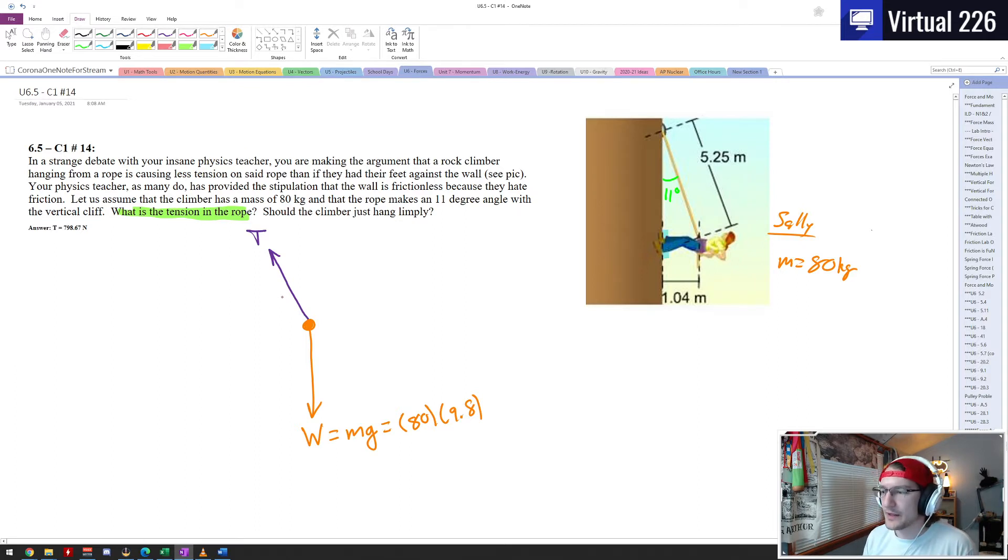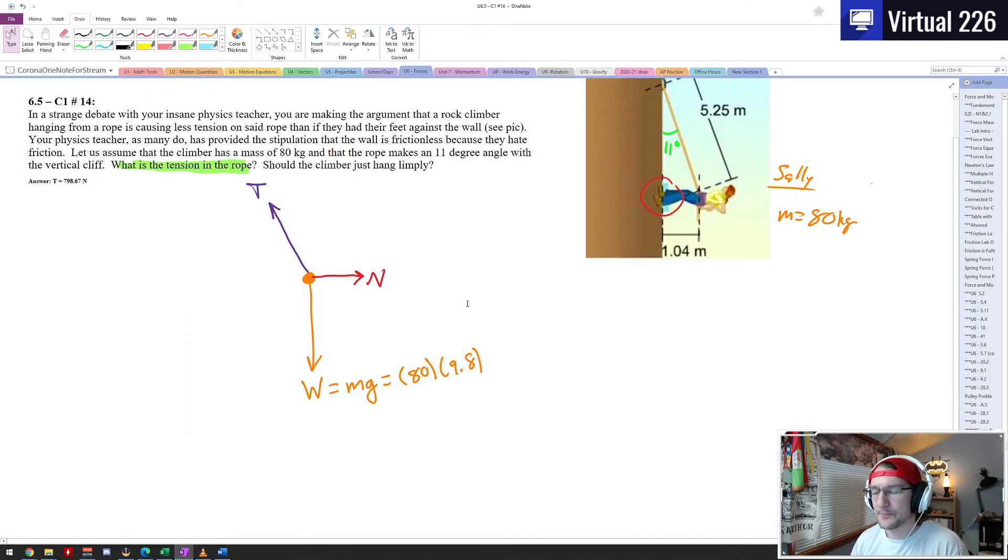Now if we wanted to get kind of technical here, there is one more force acting on her. Her feet right here, they are pushing into the wall and that means the wall is actually pushing back on her. So there is actually a normal force from the wall pushing this way, which is kind of a weird thing to look at, but that force needs to exist there for pretty obvious reason in just a second. So there's our normal force. So that is our complete free body diagram and we're going to see why we really don't care about that normal force in like half a second.